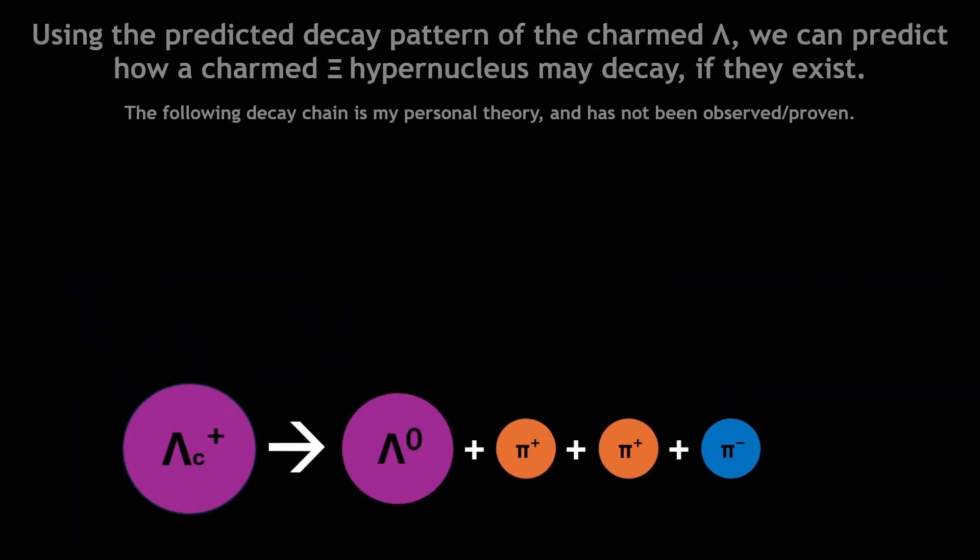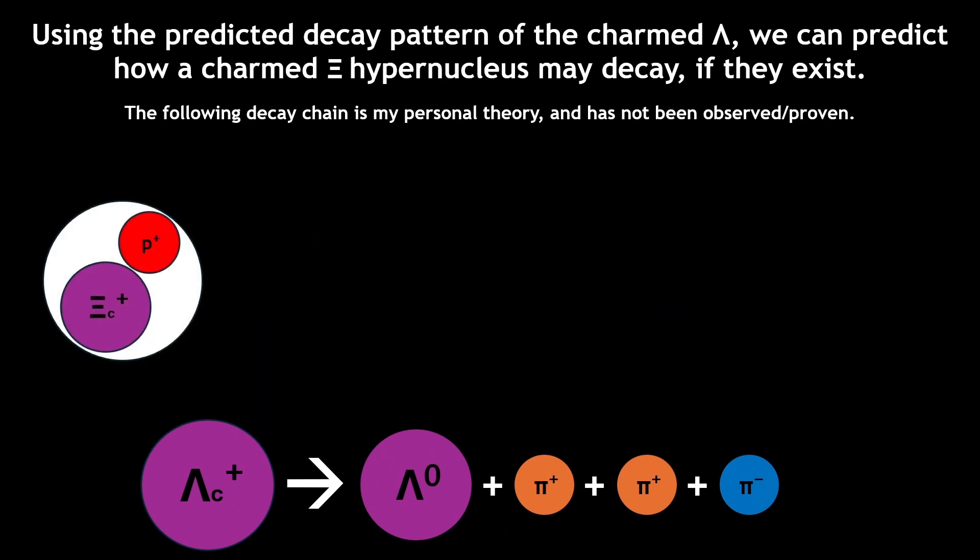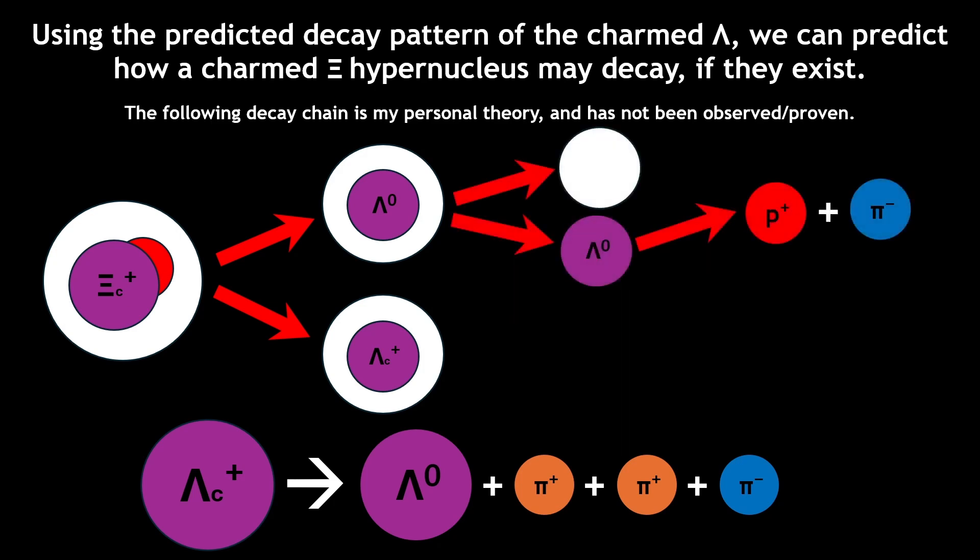The following decay chains are my personal theory, and have not yet been proven. The charm xi would likely react with a proton to the bound nucleus, which would produce two resulting hypernuclei, one with a lambda baryon, and the other with a charmed lambda baryon.